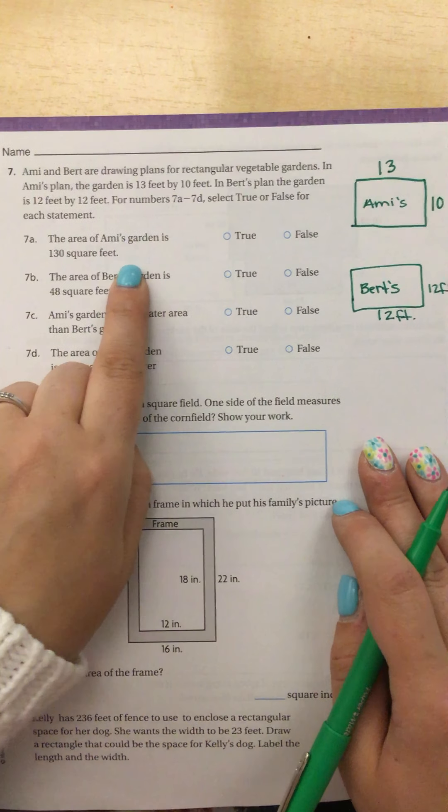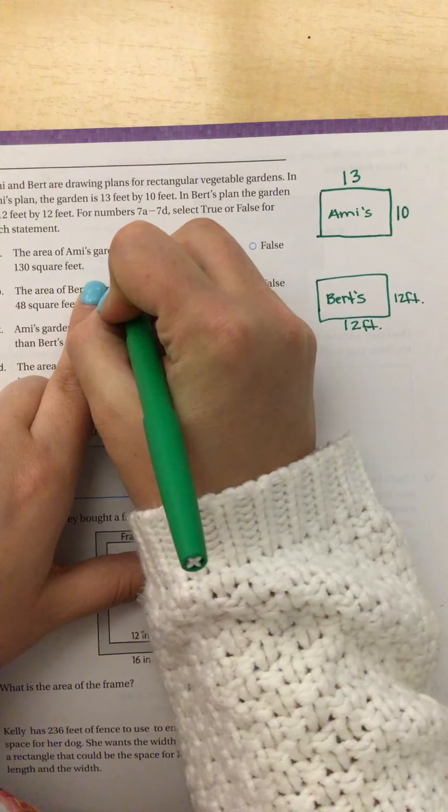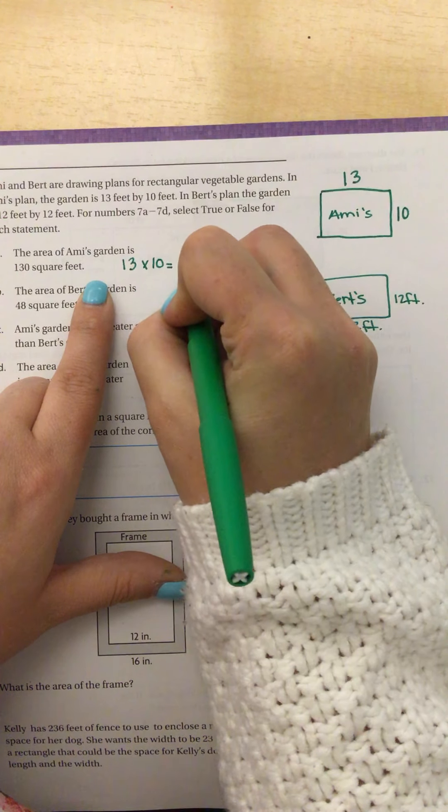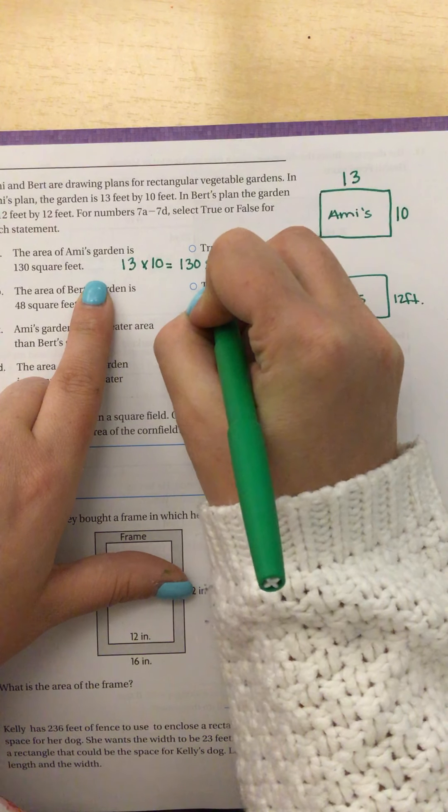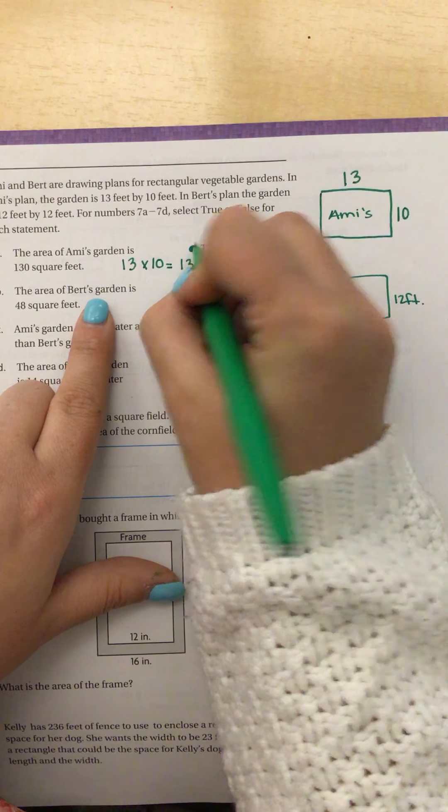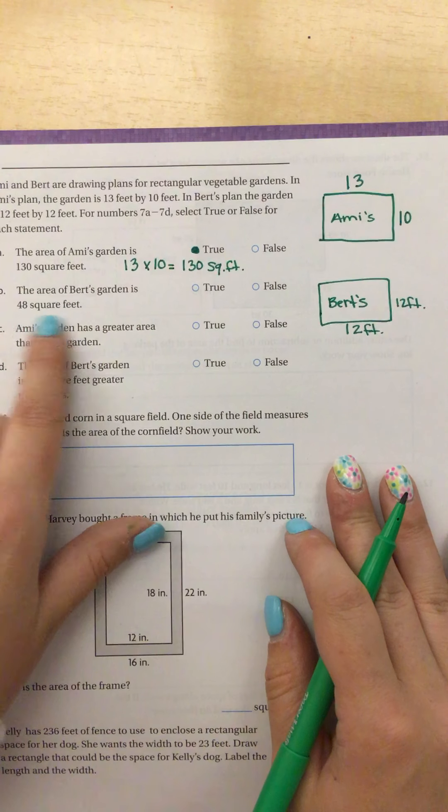Now we need to use this information to answer questions 7a through 7d. So 7a says the area of Amy's garden is 130 square feet. Well, I know that I do my length times my width. 13 times 10 is 130, and my label is square feet. Yes, that is true.